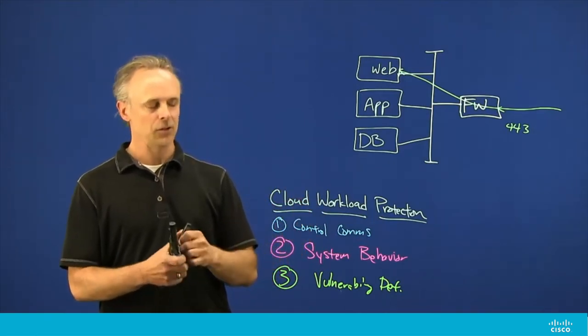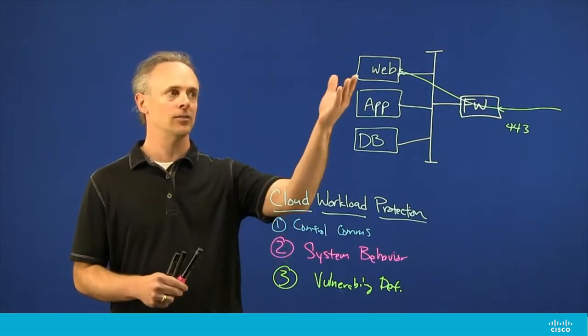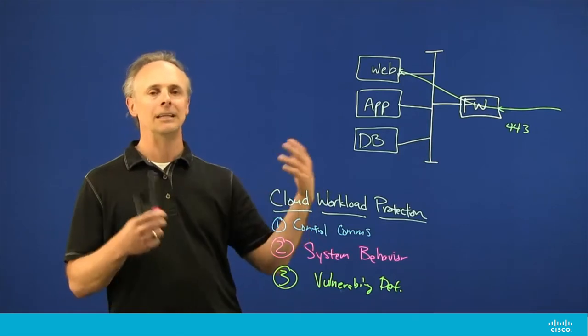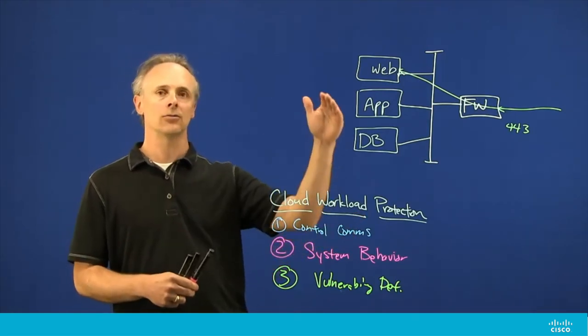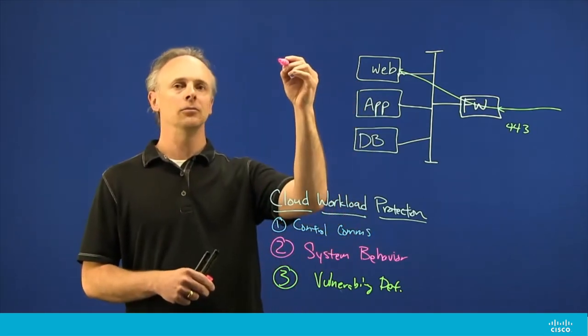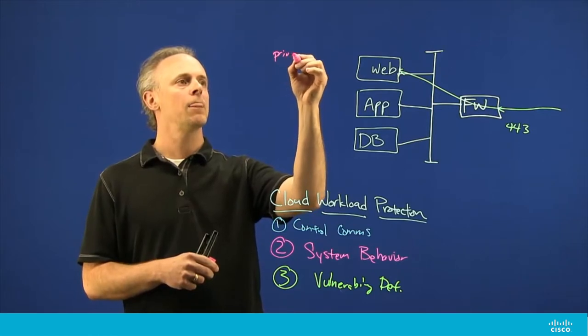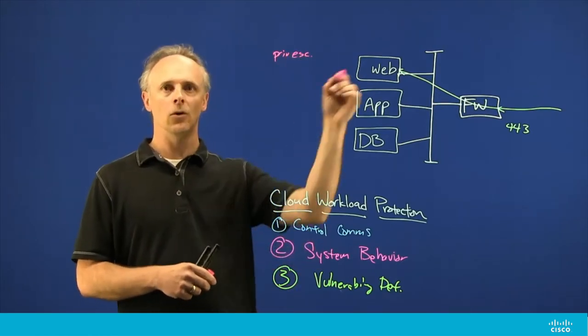Once they execute that vulnerability, then they have access to this system through basically any means they want, not just through the web interface on port 443. That allows them to get root level access and escalate their privilege on that machine.